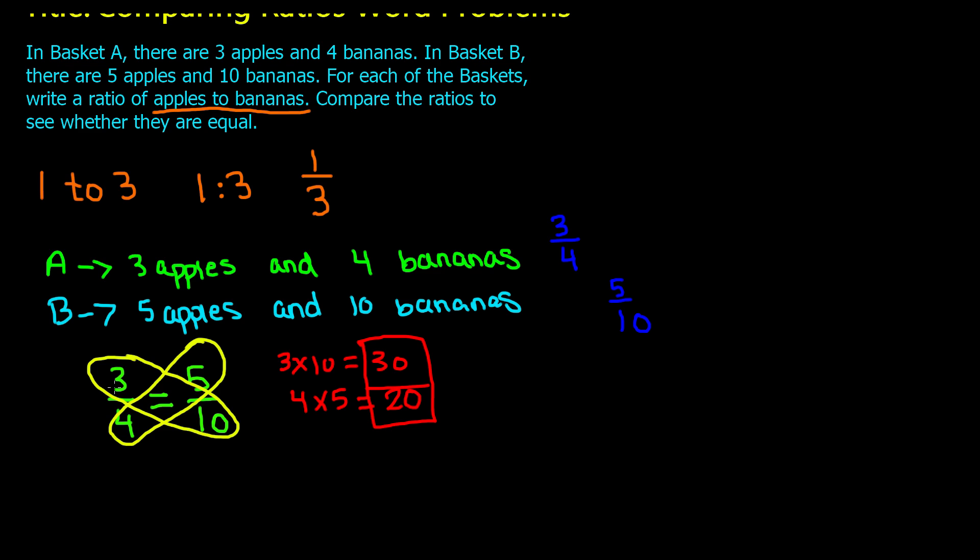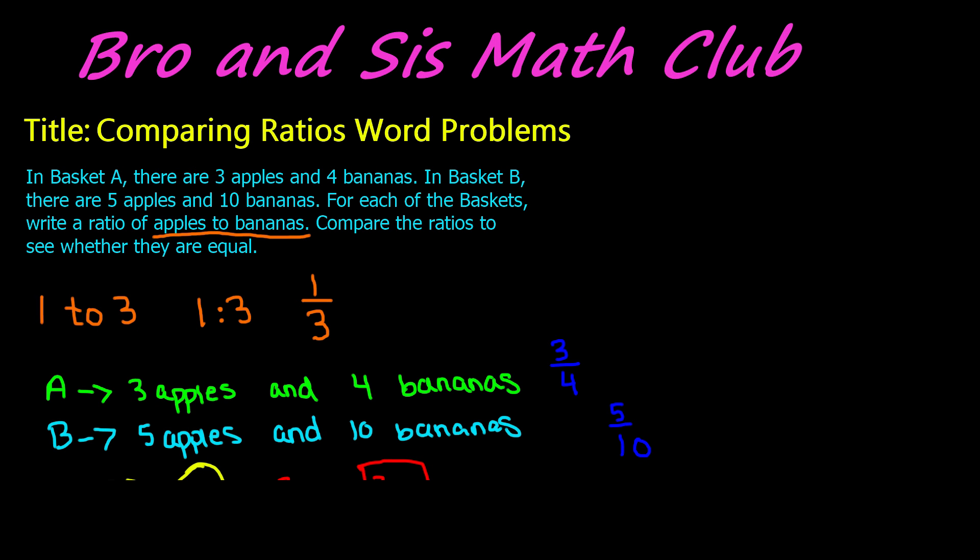This is how you compare ratios with word problems. Make sure that you are reading the word problem very carefully to see what exactly it's asking us. In this case, it was asking us the ratio of apples to bananas. It is always helpful if you just write it out and then you can write your ratios and compare them. The easiest way to compare them is when they are in fraction form. Thanks for watching this video and we'll see you guys next time. Bye.